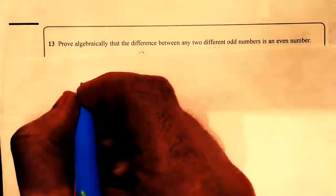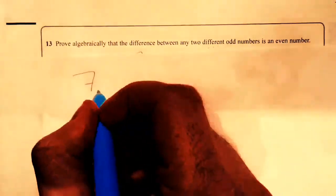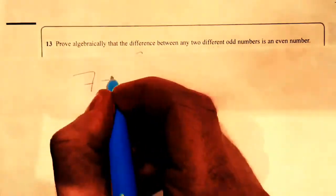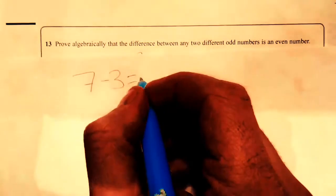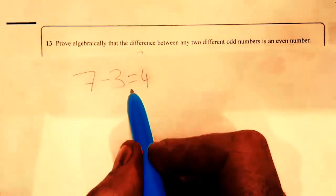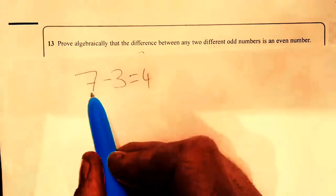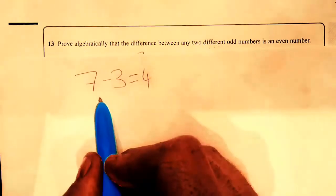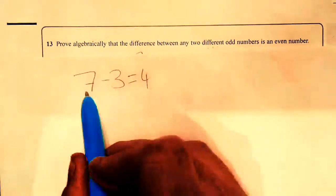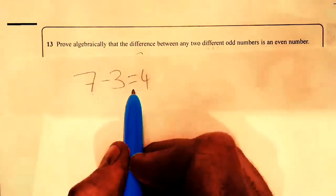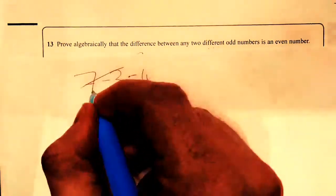Now, some people tend to just choose any two odd numbers, like 7 and 3. Differences subtract. 7 minus 3 is 4. This only proves that 7 minus 3 is 4. If you want to do this way, you'd have to write every single combination of odd numbers to see if it is an even number. But obviously that's impossible.